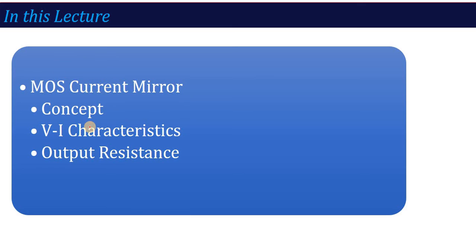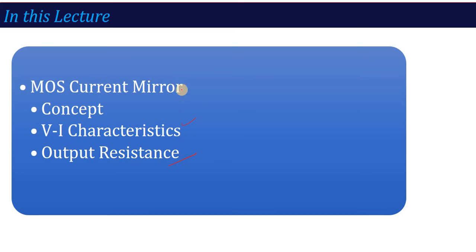The current mirror concept is that particular circuit in which the output current and input current are related — the output current equals the input current. Here we are studying the MOS based current mirror structure, plus we are talking about VI characteristics of current mirror and output resistance of current mirror. So let's start with our lecture on MOS current mirror.